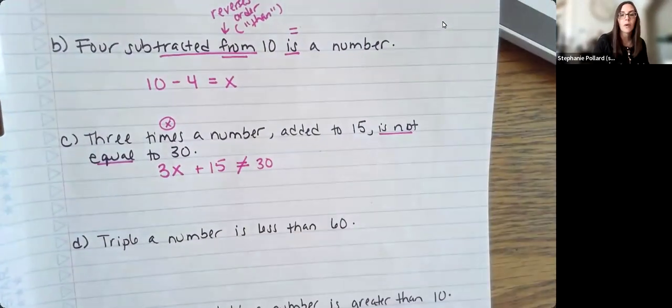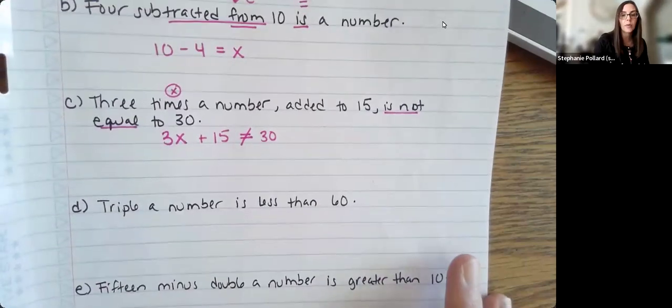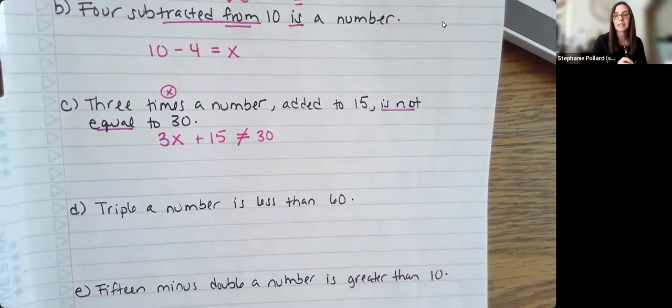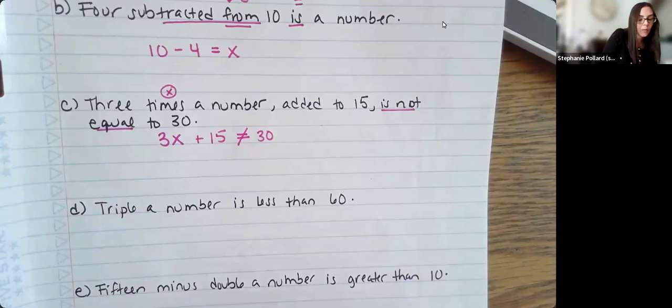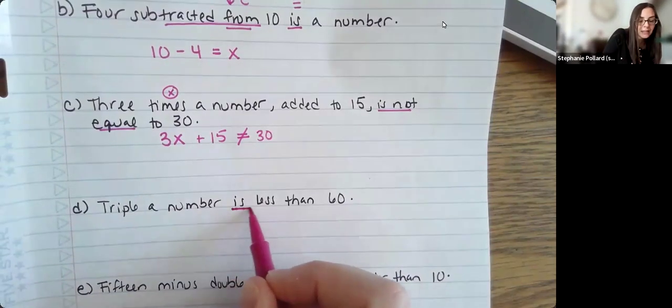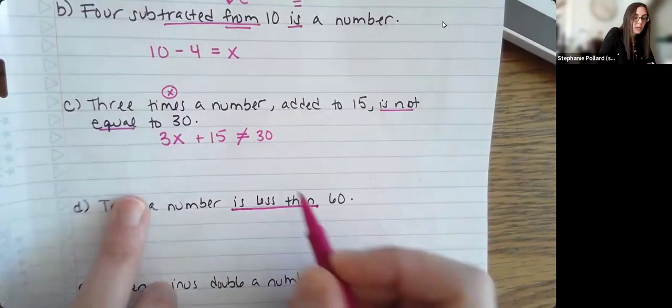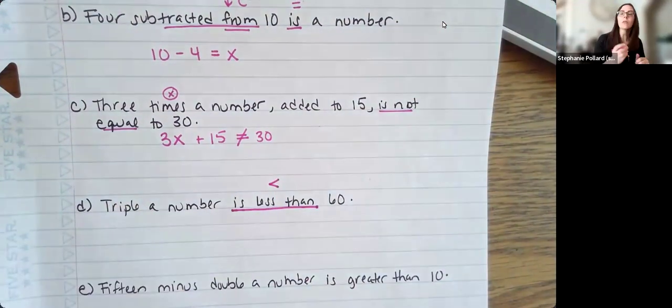Next, I have some inequality problems. So here we have triple a number is less than 60. Now a key change is that word is. So is less than is referring to an inequality symbol. So you do be careful there.